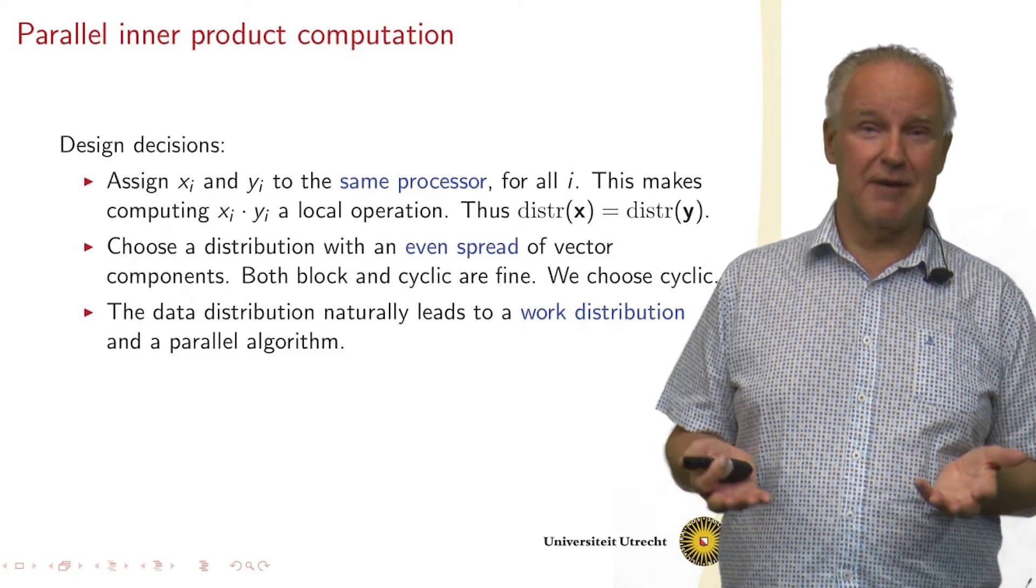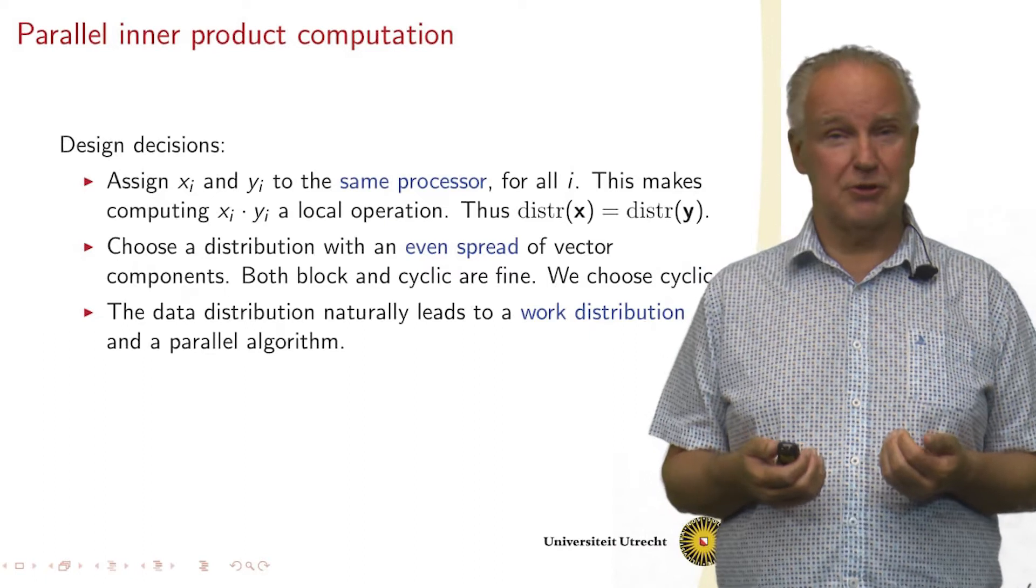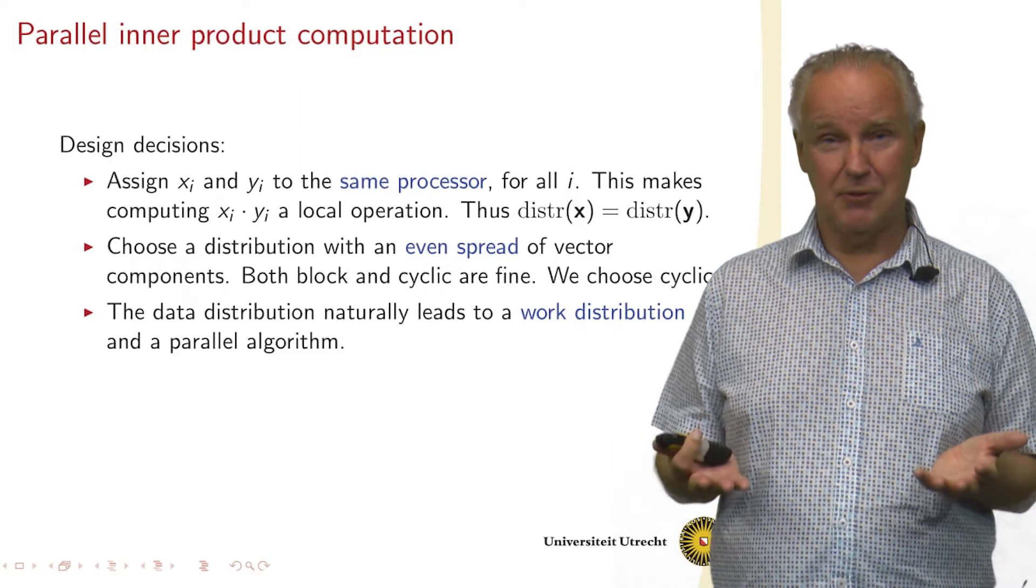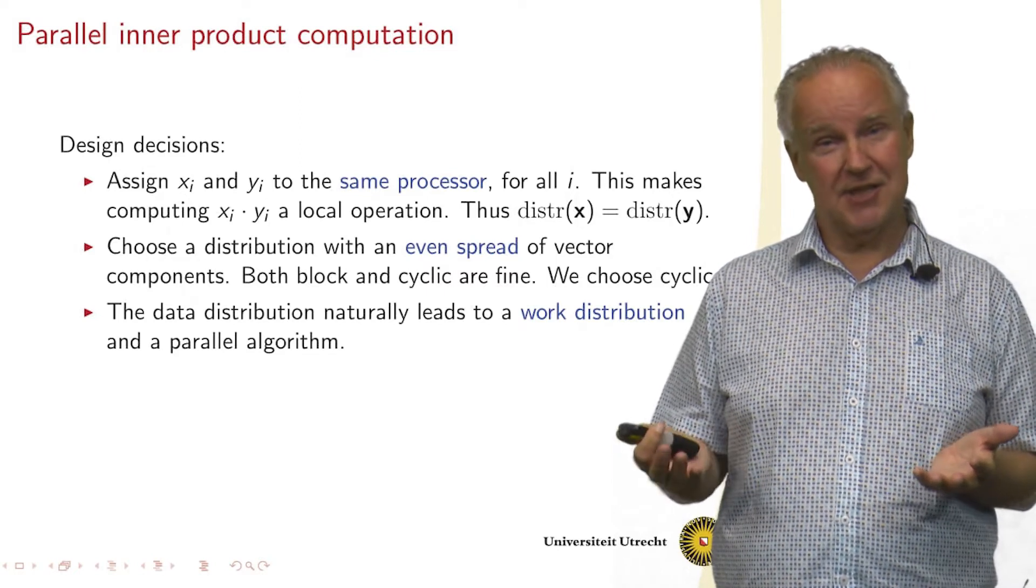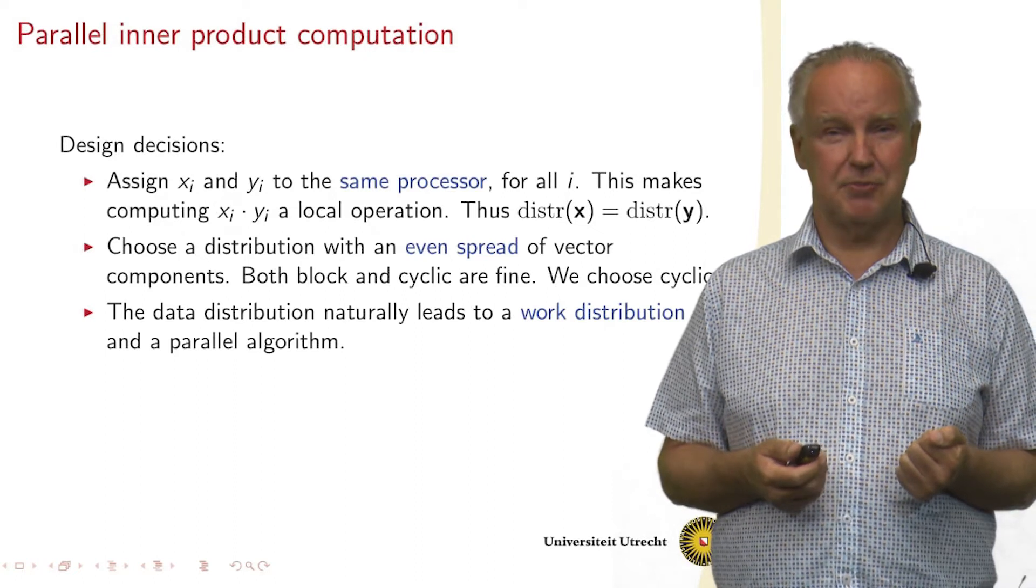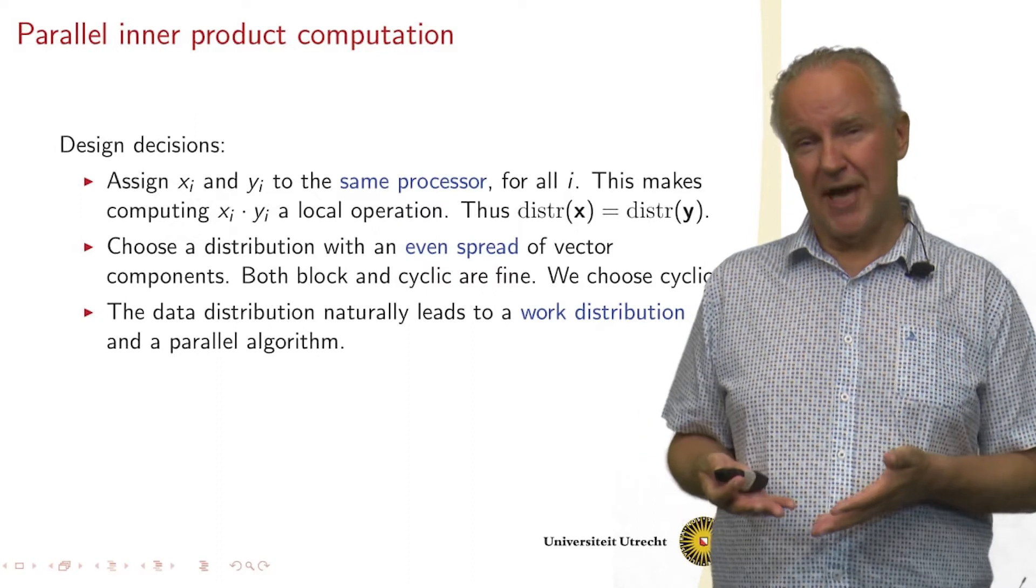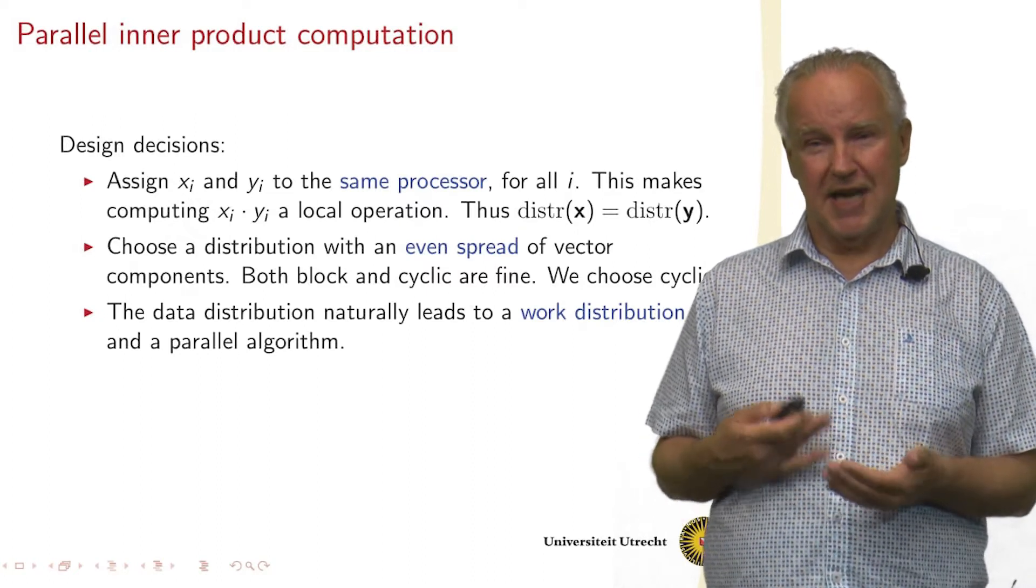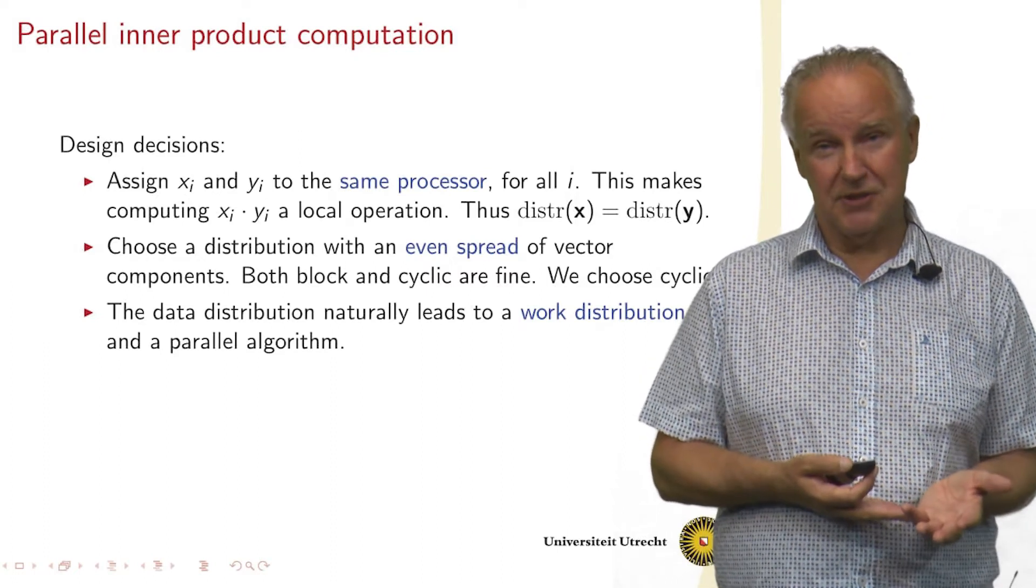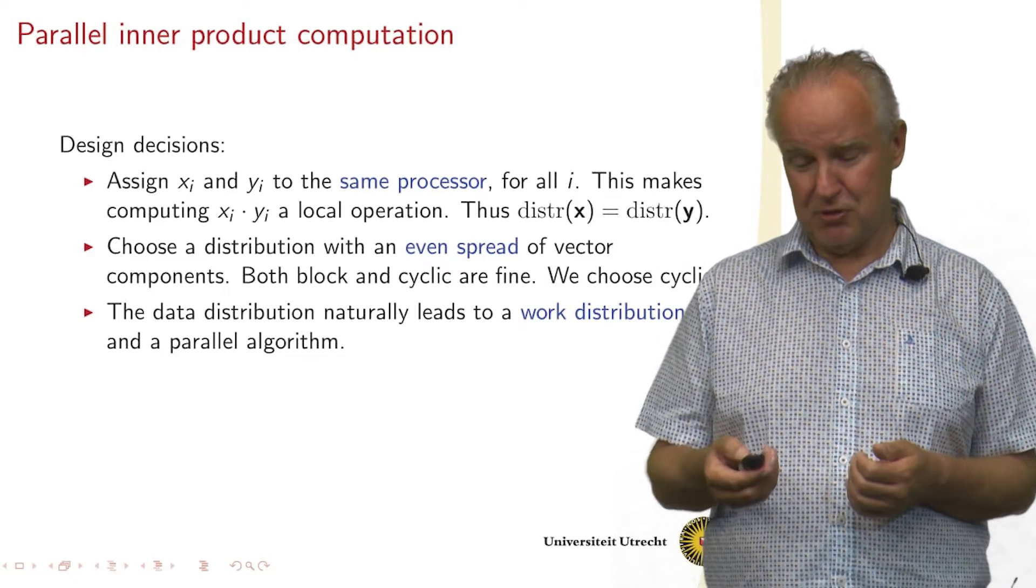The other choice we have to make is we could use a block distribution, we could use a cyclic distribution. We want to spread the work equally. And in this case both would work, but we choose the cyclic distribution just for illustration purposes. And then if we have such a distribution, the algorithm follows from what is the sequential, the non-parallel computation, and our decision about the distribution.